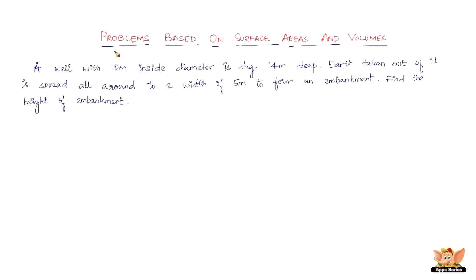In this video, let us continue to solve more problems based on surface areas and volumes. We have a problem here: a well with 10 meter inside diameter is dug 14 meters deep, and the earth taken out of it is spread all around to a width of 5 meters.